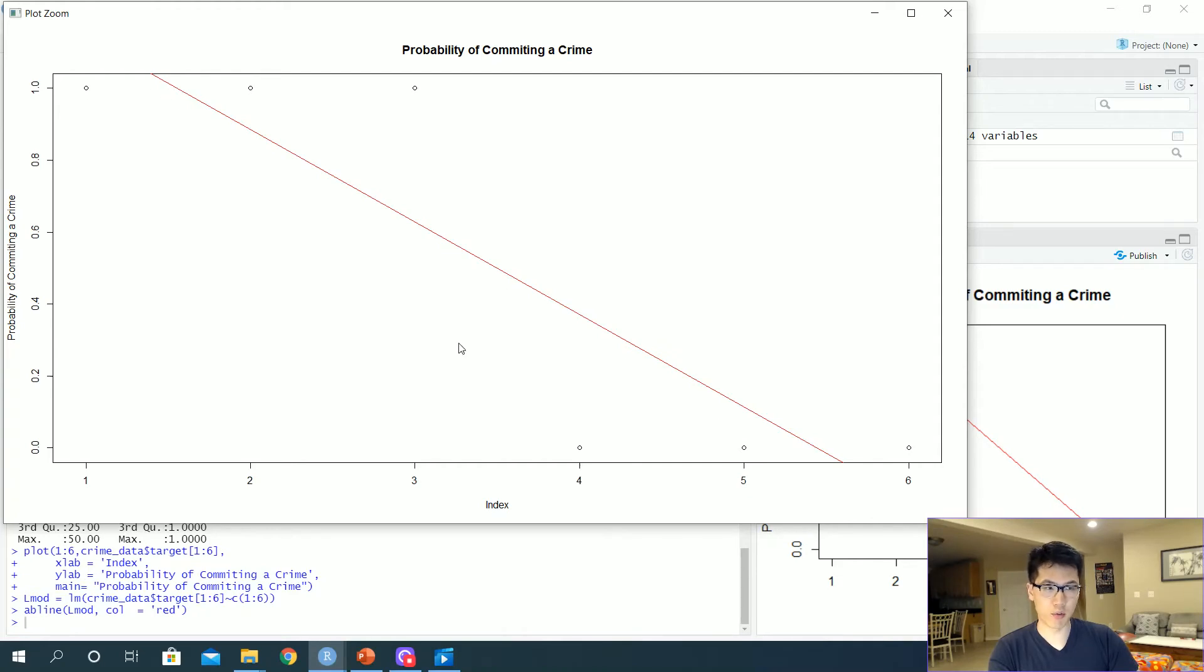Obviously this linear regression is not capturing all the points since our outcome is a categorical output, either zero or one. So we want more of an S-type curve in order to predict or better predict what our variables will be in terms of our given data.